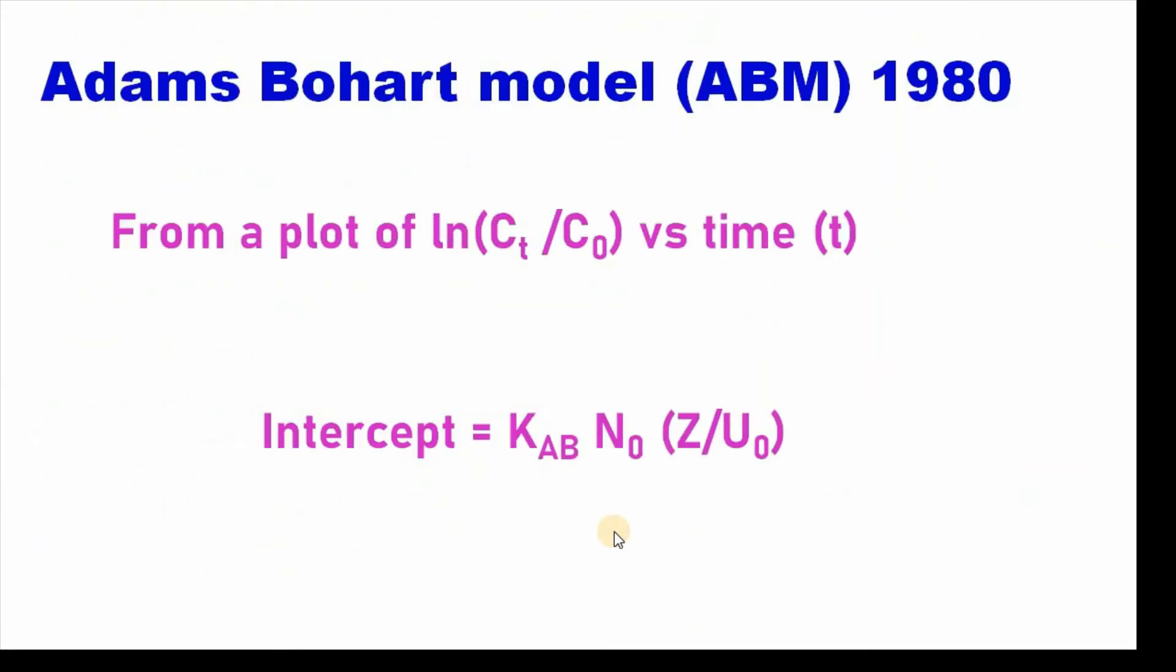Then, from a plot of ln(Ct/C0) versus time t, we can easily get the slope equal to KAB*C0, intercept equal to KAB*N0*(Z/U0). Then we can easily calculate values of KAB and N0 using both Origin and MS Excel.